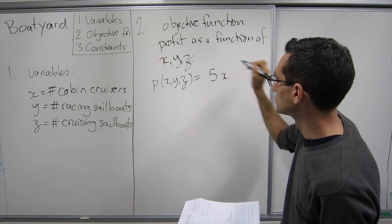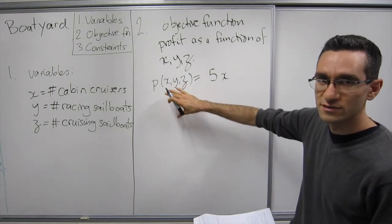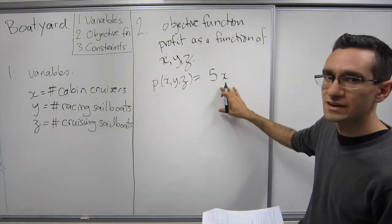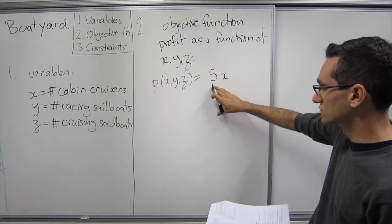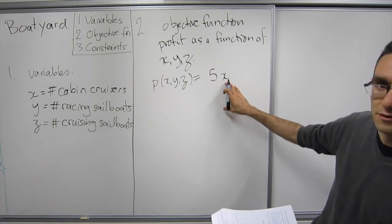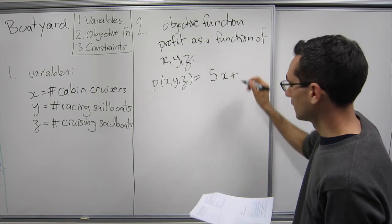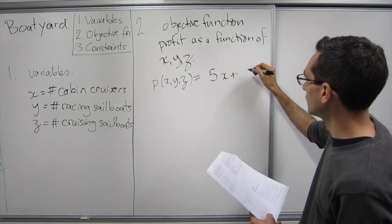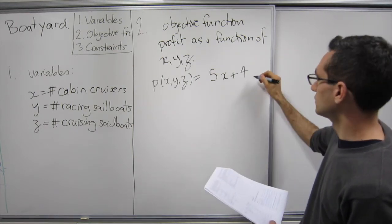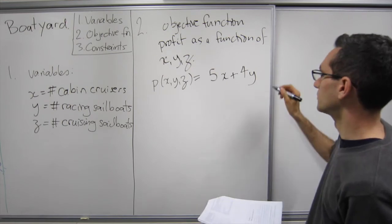So what we're going to do is we say profit will be in terms of thousands of dollars. So 5X represents $5,000 per cabin cruiser manufactured.